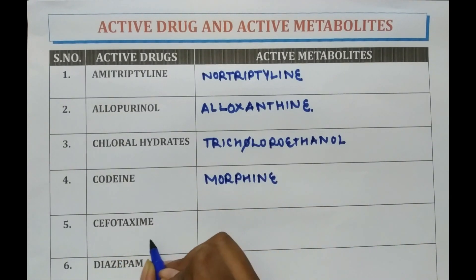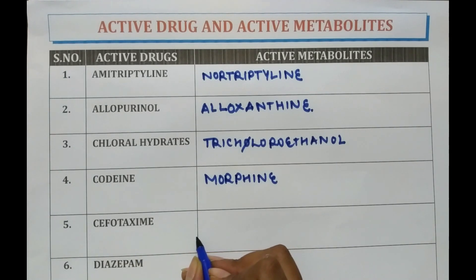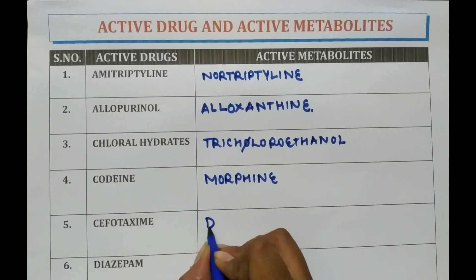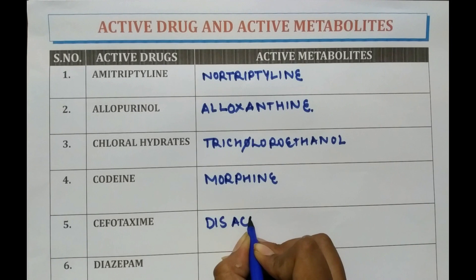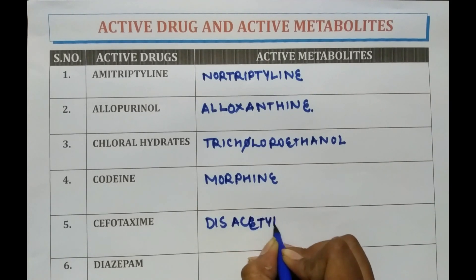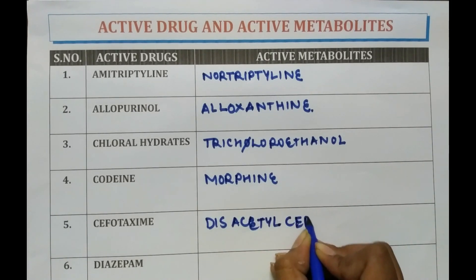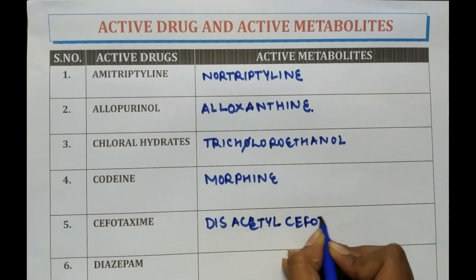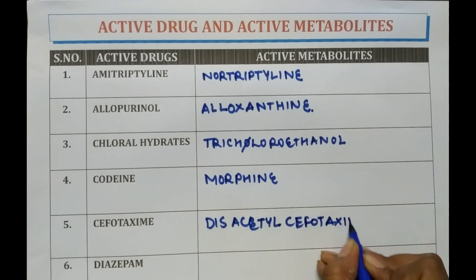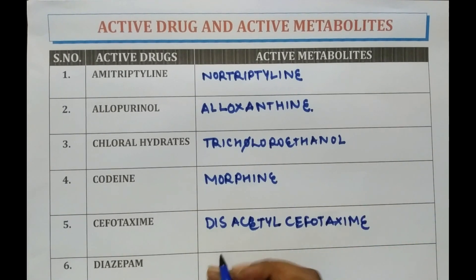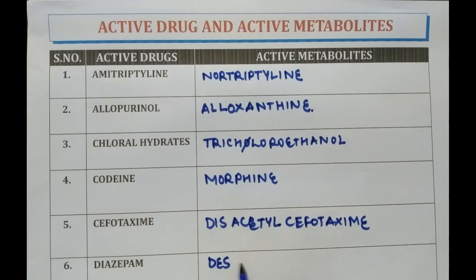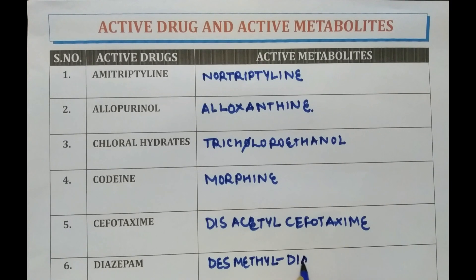Cefotaxime is converted into desacetyl-cefotaxime. Diazepam is converted into desmethyl diazepam or oxazepam.